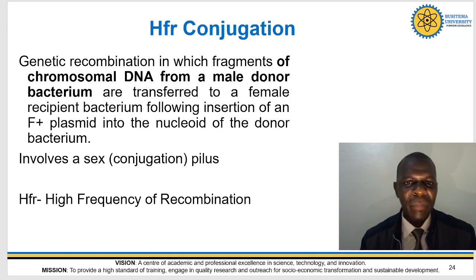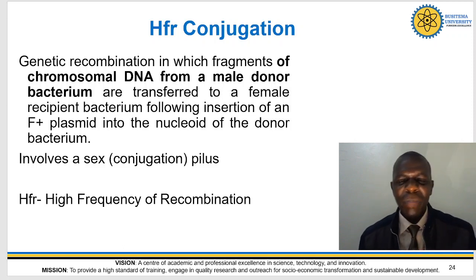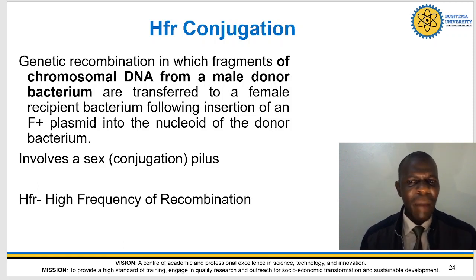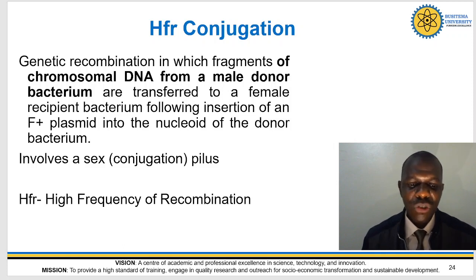After that, there is Hfr conjugation or high frequency recombination conjugation. In this, genetic recombination involves fragments of chromosomal DNA from a male donor bacterium being transferred to a female recipient bacterium, following insertion of an F+ plasmid into the nucleoid of the donor bacterium, and it involves sex pili. In F+ conjugation we only pass on the ability to form sex pili with no chromosomal DNA; however, in Hfr conjugation chromosomal DNA is passed on, so the bacterium can proceed with genetic transfer unabated - that's why it is called high frequency recombination.